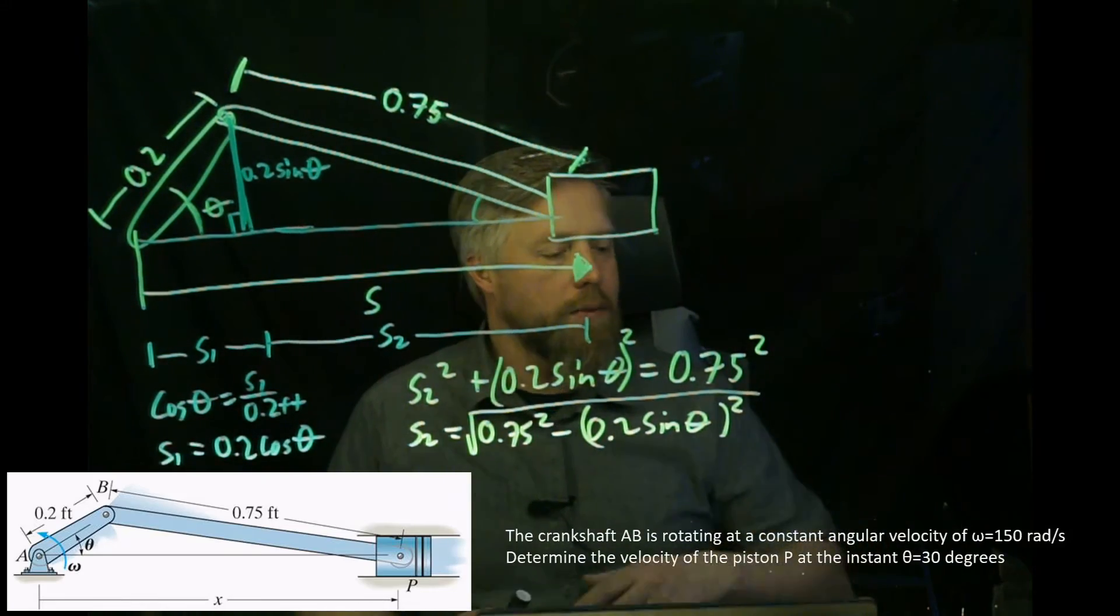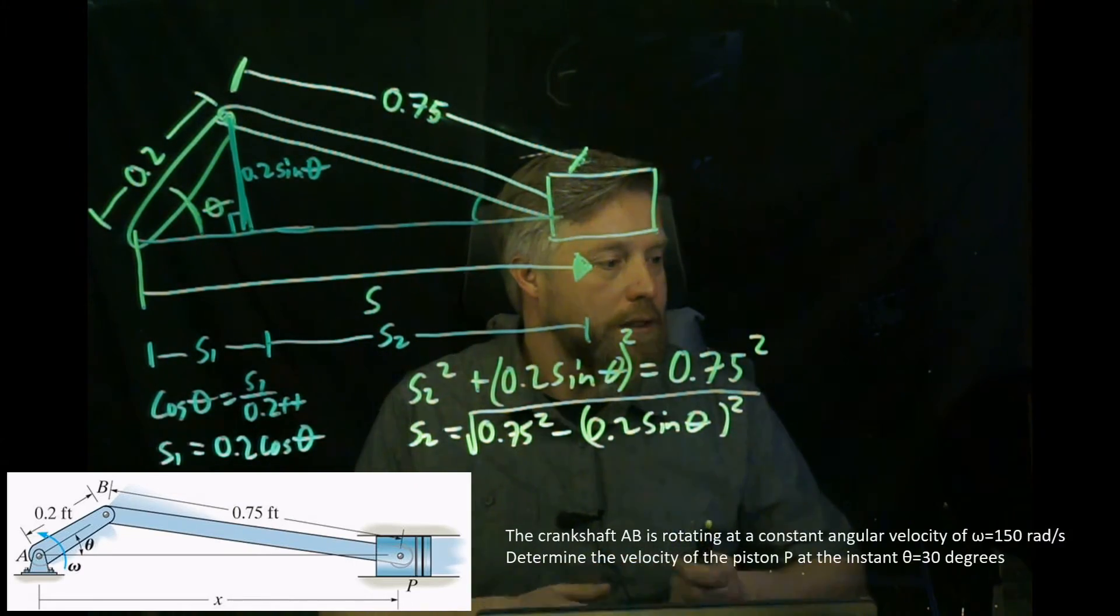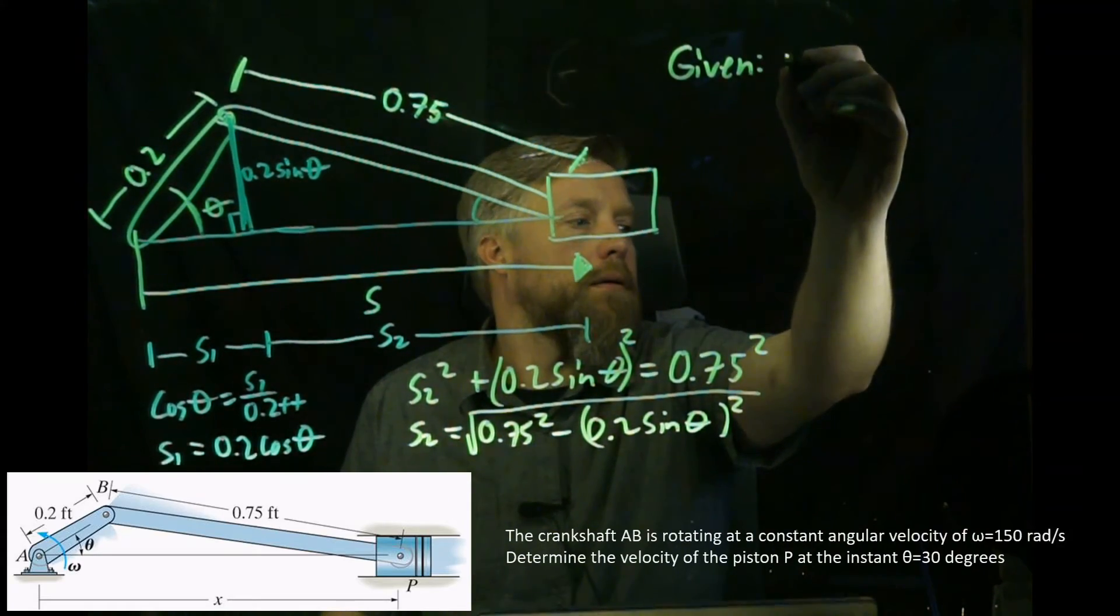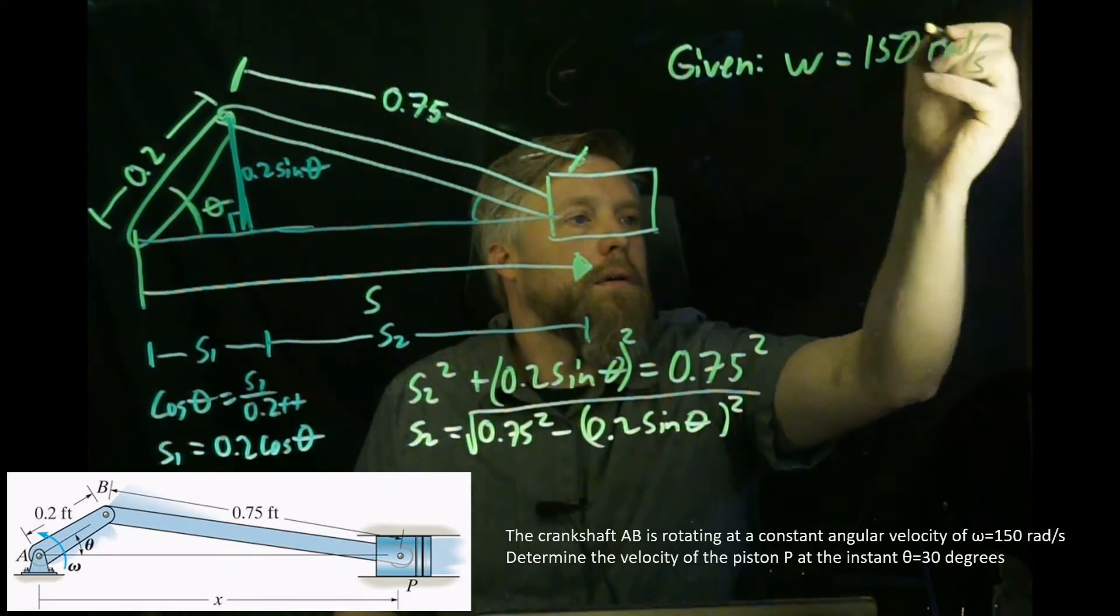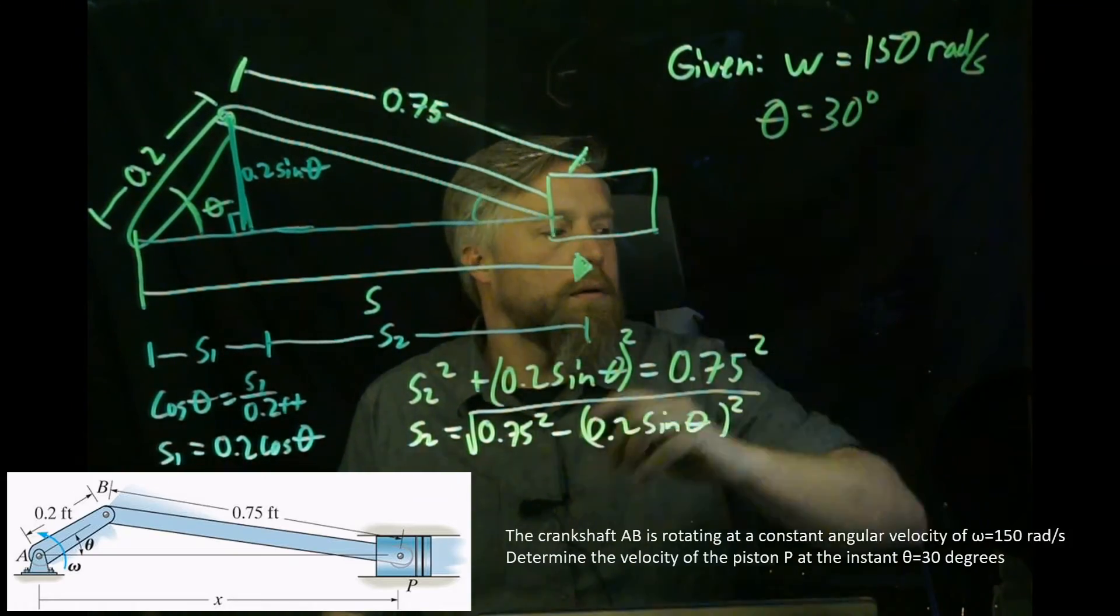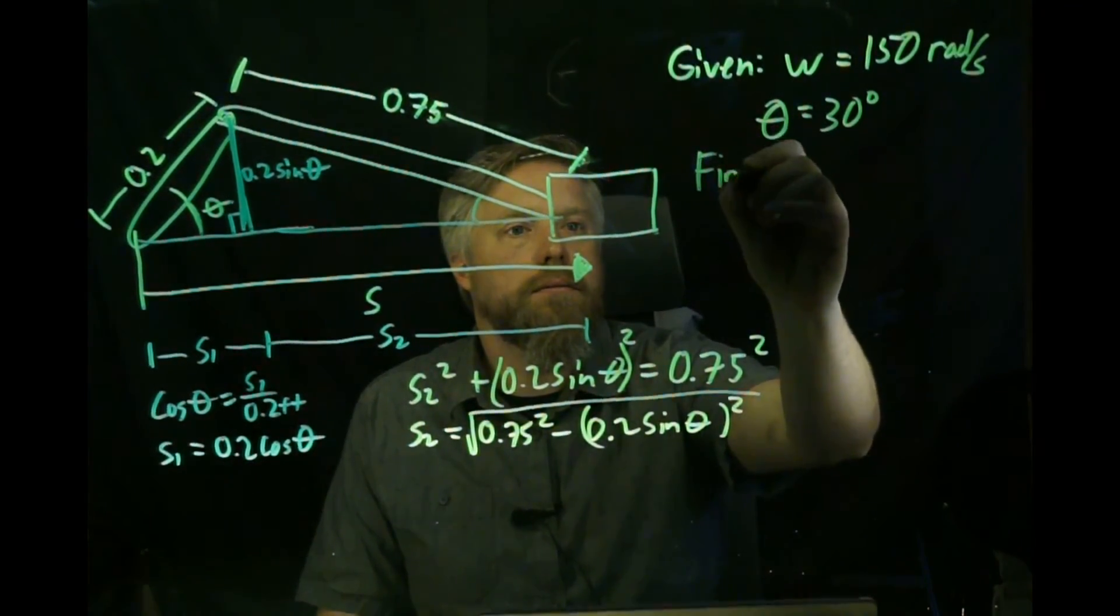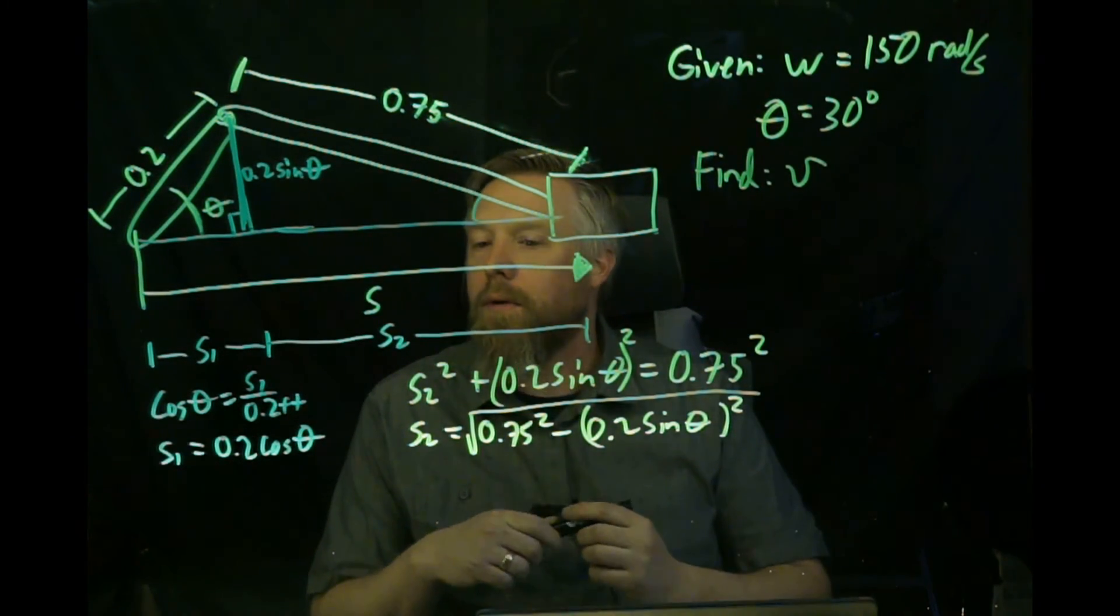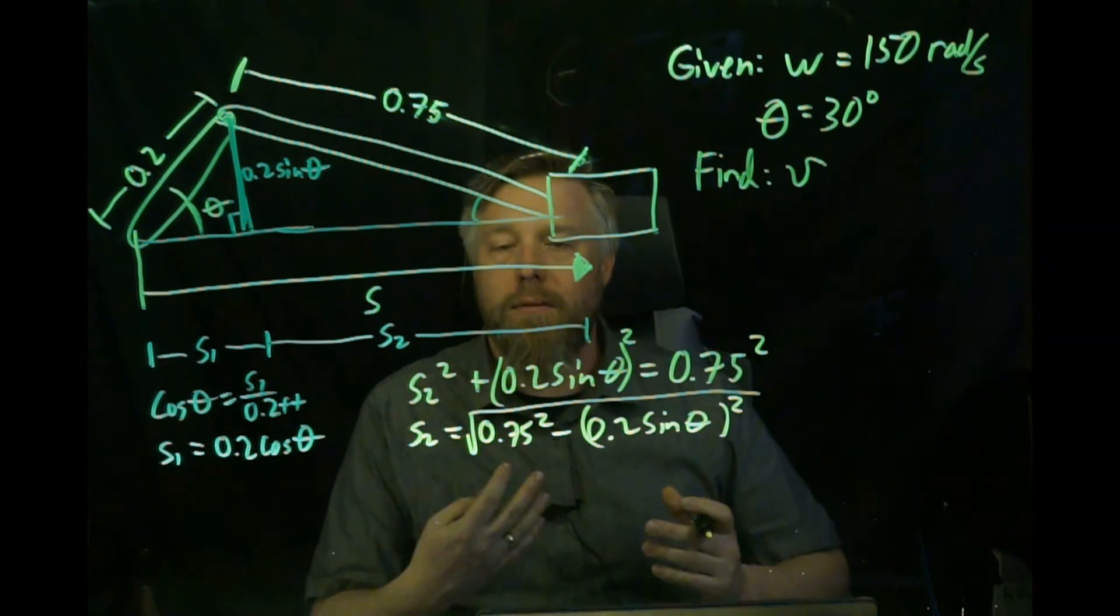I want to give myself some more room, but I need to write down my givens. If you read the problem, the crankshaft AB is rotating at a constant angular velocity of omega. So they give us omega—we'll write our givens up here. Omega equals 150 radians per second, and we're also given that theta equals 30 degrees. And what are we trying to find? The velocity of the piston. I'll just call that V. Now we need to put S1 and S2 together to make S, so we have one equation with only theta as the unknown. Then we can take the derivative of it.